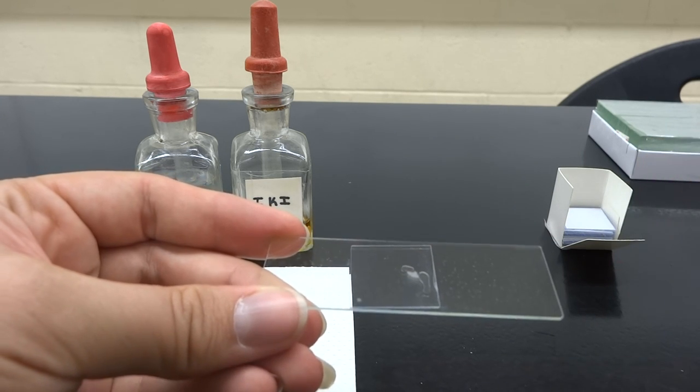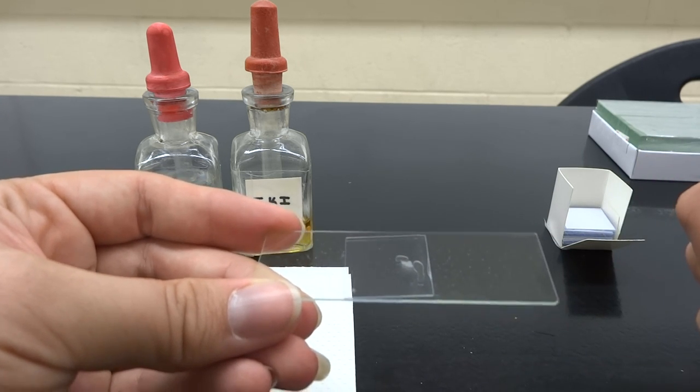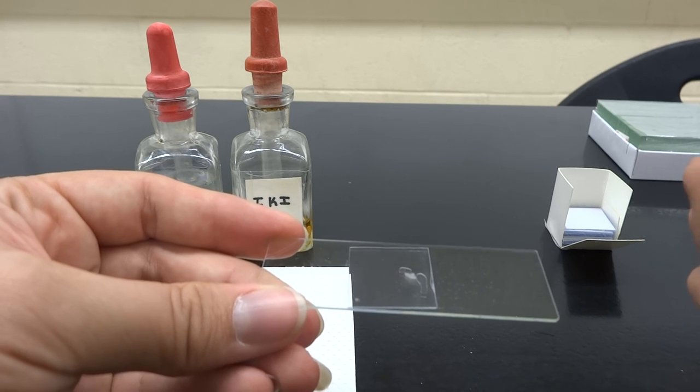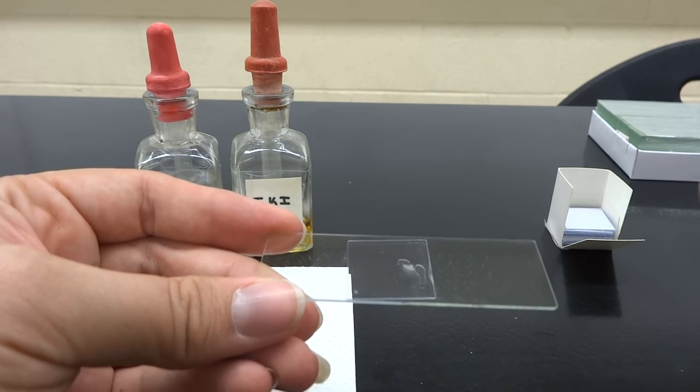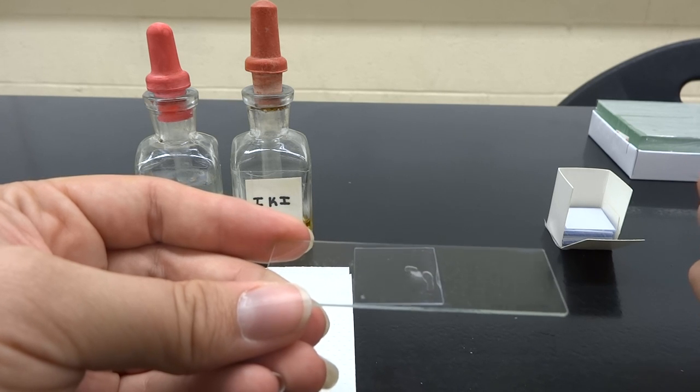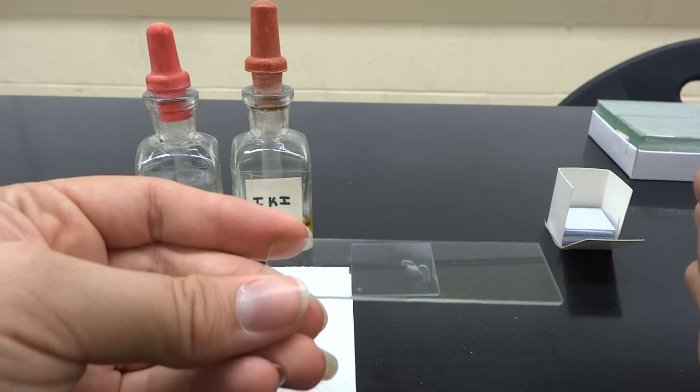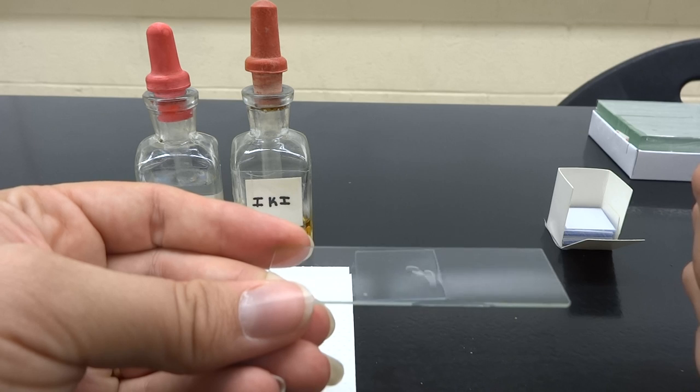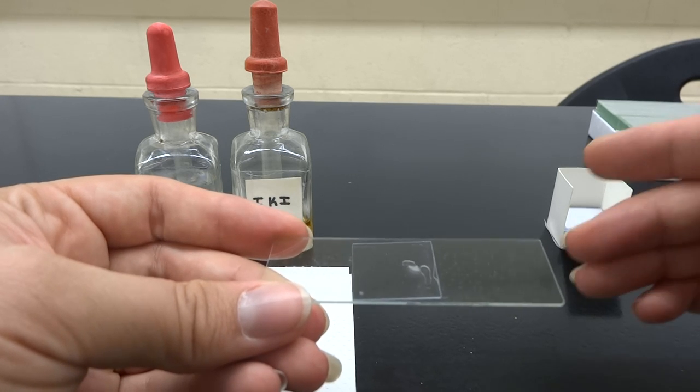So now a lot of times the specimens that we have are not going to be easily seen because they're clear-ish kind of cells. And the potato you can kind of see underneath the microscope, but it is really nice to see the definition. So with potatoes, they have a lot of starch in them. Iodine and starch mixed together gives us a purplish color.